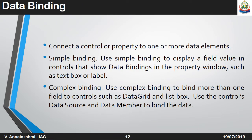Data binding is when we want to connect data from the database to a control. It connects a control or property to one or more data elements, and has two types: simple binding and complex binding. Simple binding is used to display a field value in controls that show data bindings in the property window, such as a text box or label. Complex binding is used to bind more than one field to controls, such as a data grid or list box, using the control's data source and data member properties.